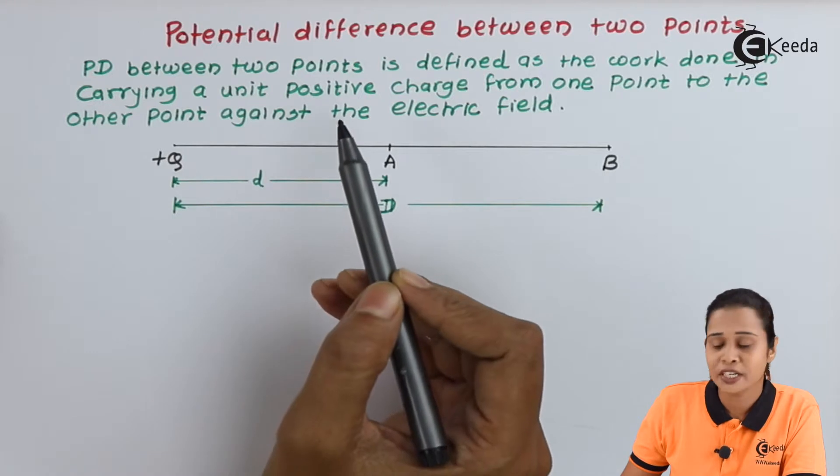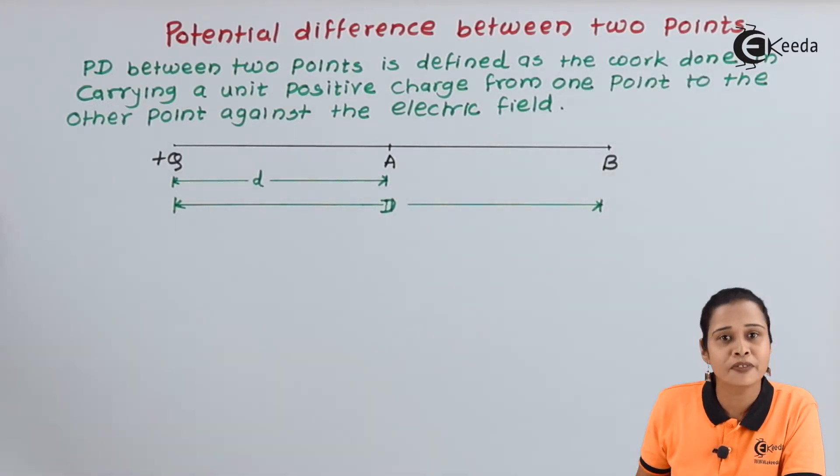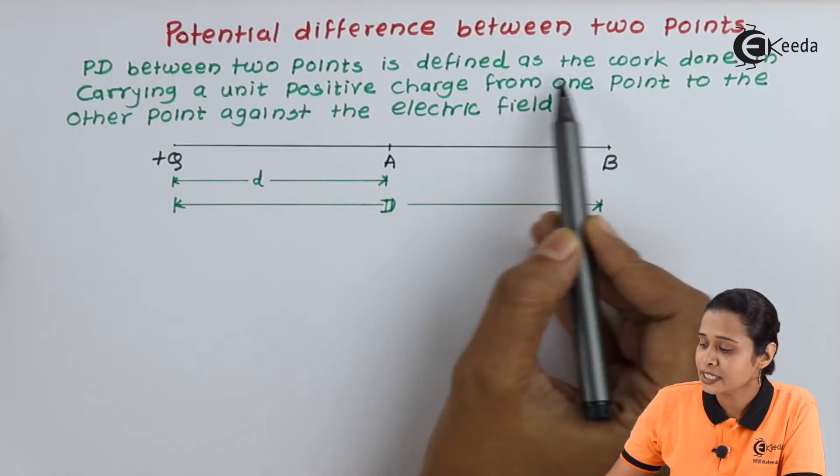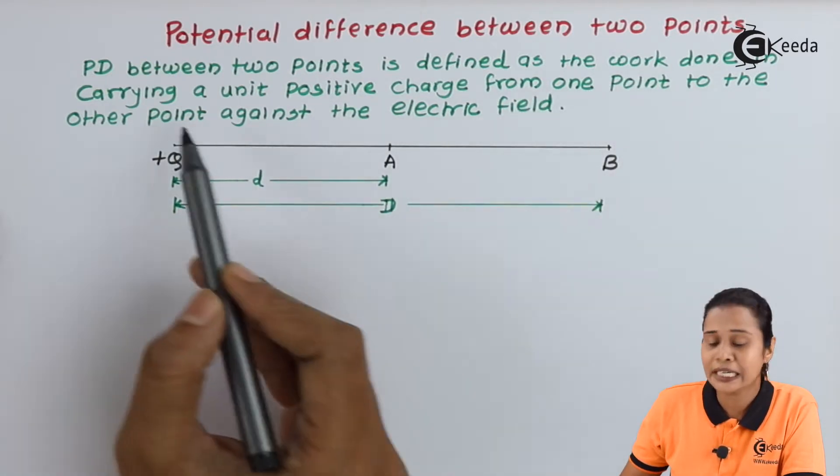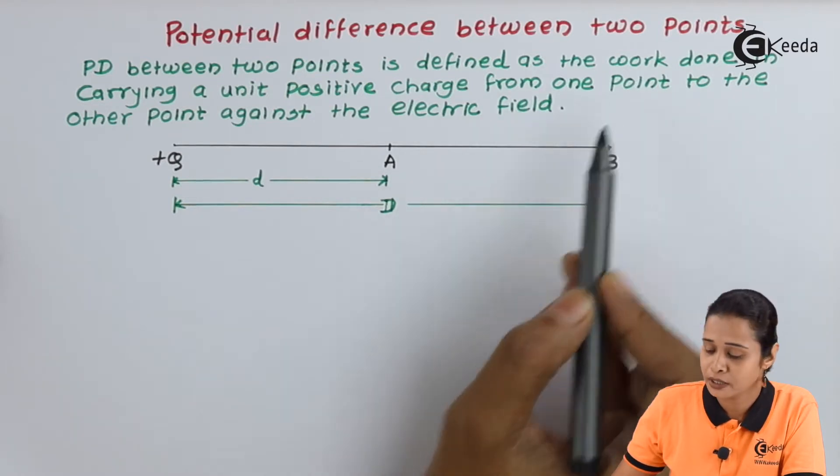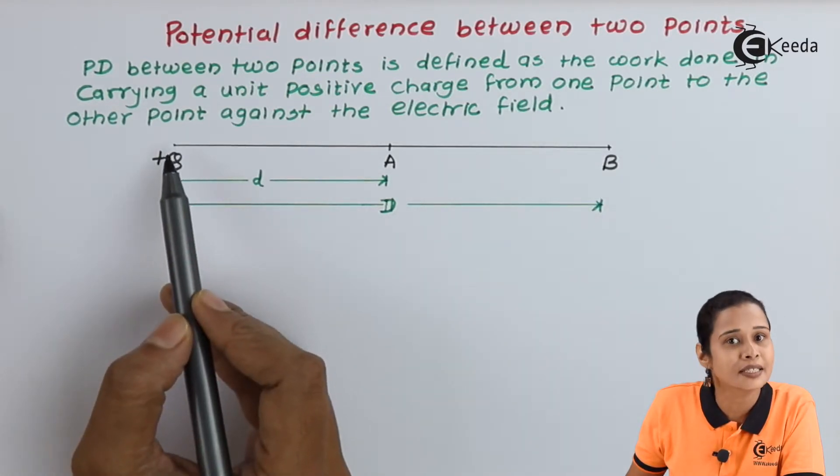Here we will see potential difference between two points. In the previous video, we have seen potential difference for a point charge. Now here we will see two points. Potential difference between two points is defined as work done in carrying unit positive charge from one point to another point against the electric field.